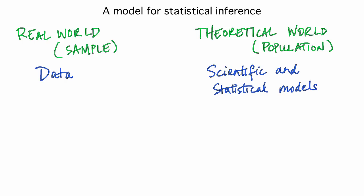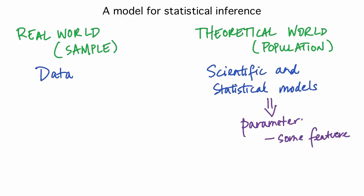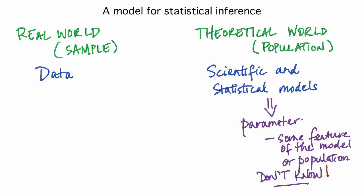Either way, we have parameters in the theoretical world, which are features of the models or features of the population. We don't know the values of these parameters, but they are fixed. They are a feature of nature or of the population, and they are what they are even if we don't know them. So they're not random.